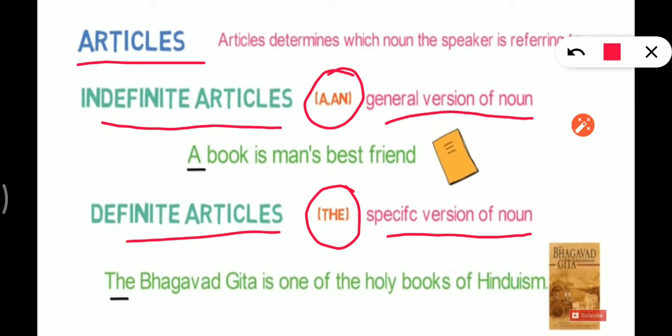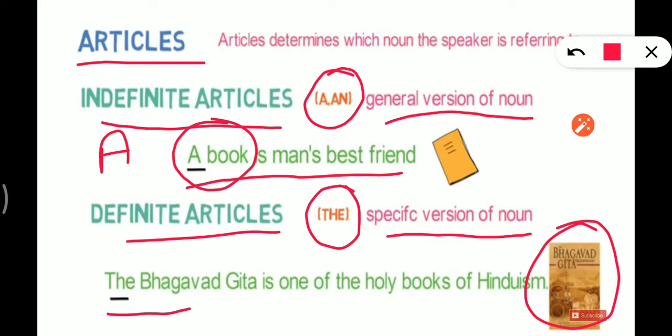Indefinite article is a general version of noun, and definite article is a specific version of a noun. Let's make it clear. Now look at the example. A book is man's best friend. Now there are so many books and we are generally talking about books, so we are writing A here. Then after, here when we make it specific we use THE. For example, we are talking about a specific book, Bhagavad Gita. Bhagavad Gita is one of the holy books of Hinduism. So here this is definite article. I hope it is clear.